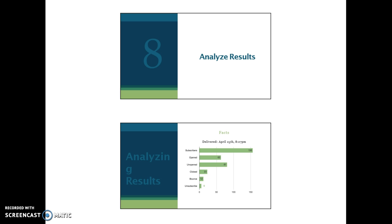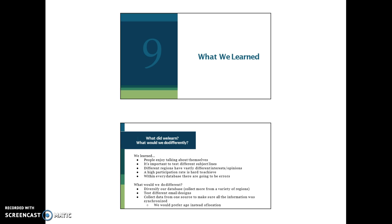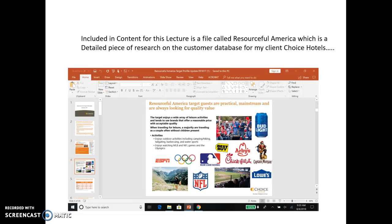Working with MailChimp helped them produce this chart — who clicked, who unsubscribed, et cetera. Total openings, 101 clicks. They also had some information on desktop versus mobile, which of course is interesting — we can't forget that most people are on their mobiles these days. What did they learn? People enjoy talking about themselves; different subject lines matter. They had a small database, and they maybe wish they had segmented by age rather than location. So this was an excellent project, and you see how a database is really used from going through this.